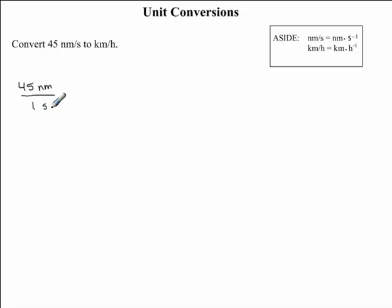So let's start off by converting our seconds into hours. To do this, we're going to have to multiply by different rates that we are already familiar with. For example, we know that there are 60 seconds in one minute. So we'll notice that if we multiply 45 nanometers per second by 60 seconds over one minute, you'll notice that we have seconds divided by seconds. So this unit will actually cancel out.